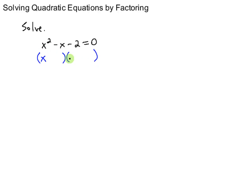To get the x squared here we have to have x and x and to get the two we need a one and a two. We know it's going to be plus and minus or minus and plus because the two is negative so they have to be opposite signs. We have to choose which one is going to give us the negative one that we need in the middle. Well, a negative two and a positive one will give me a negative one in the middle.